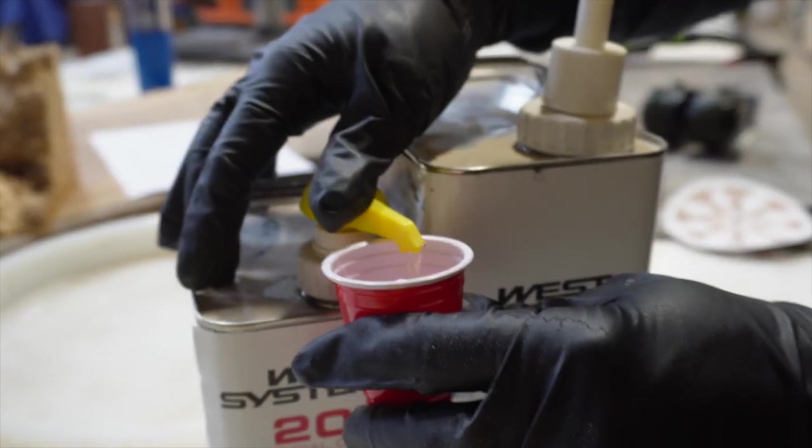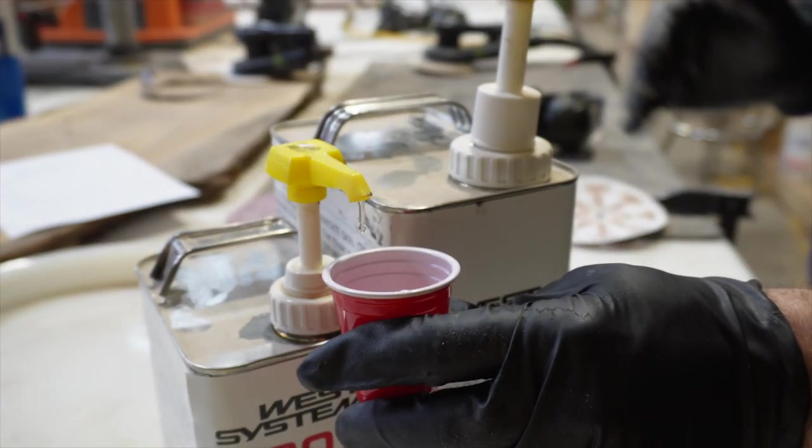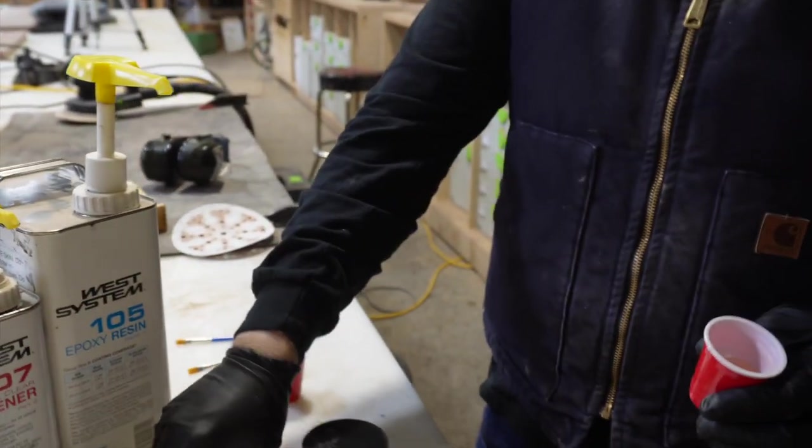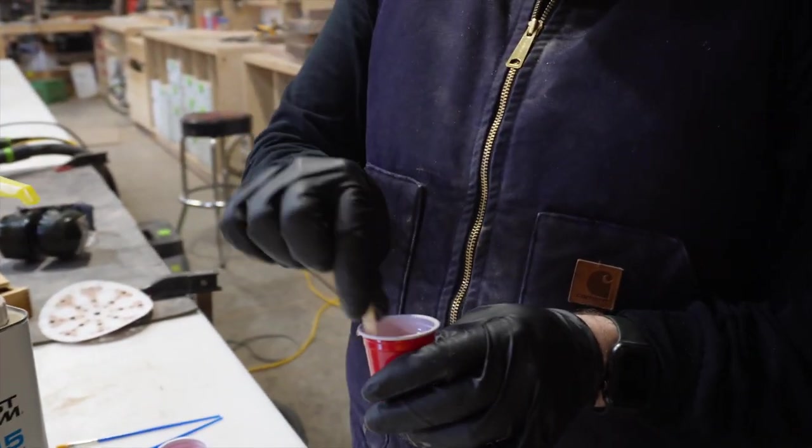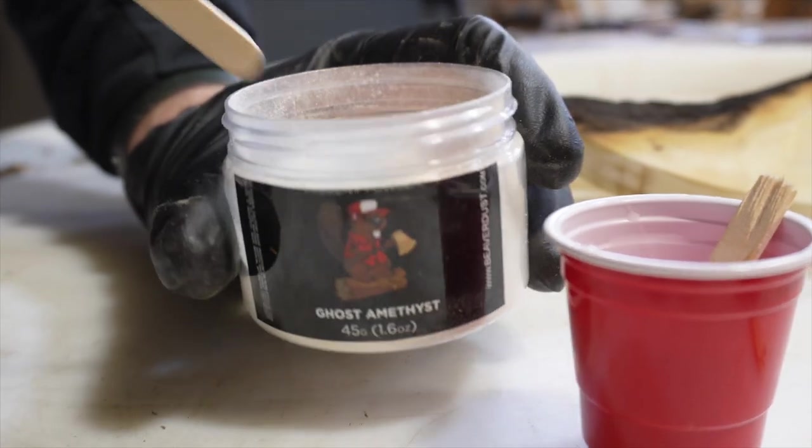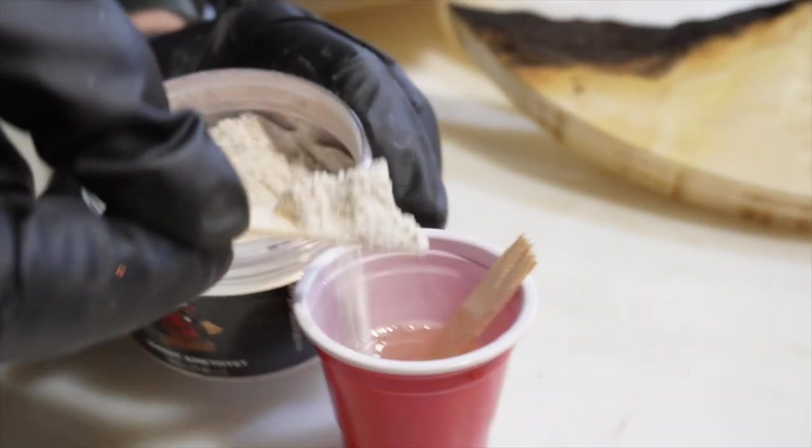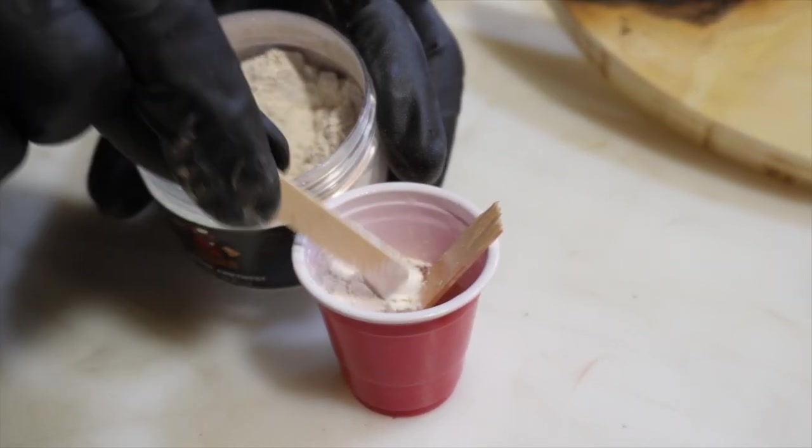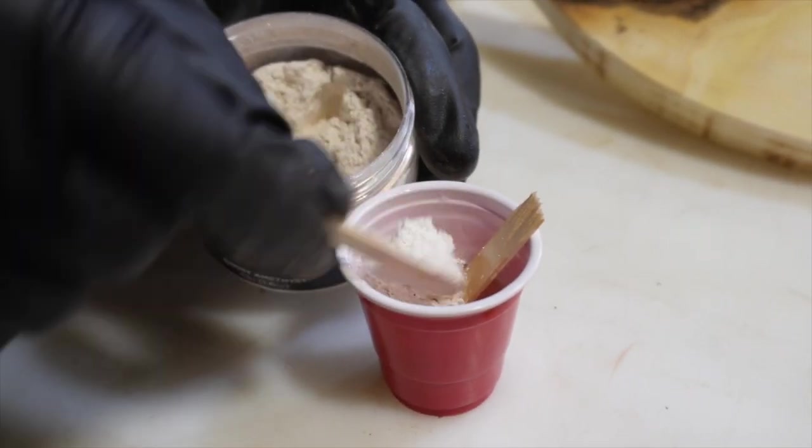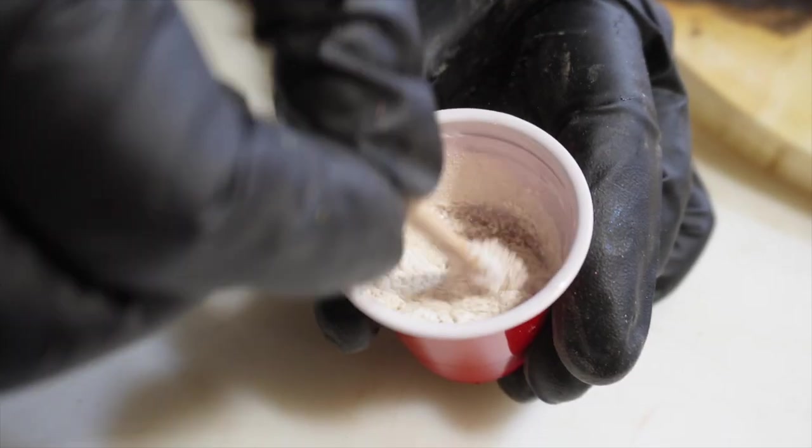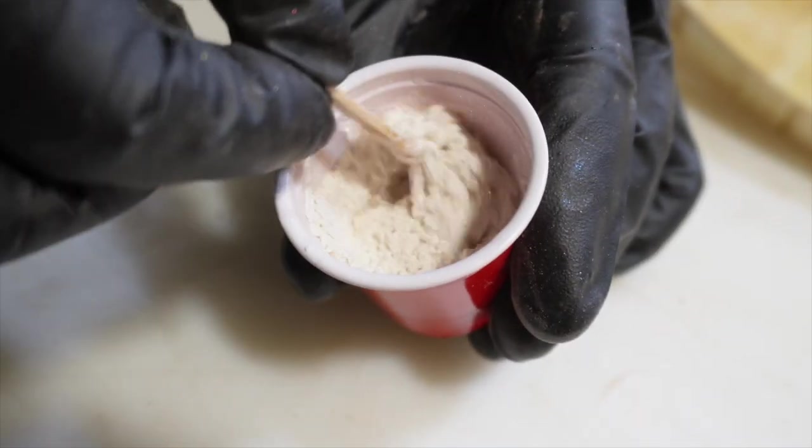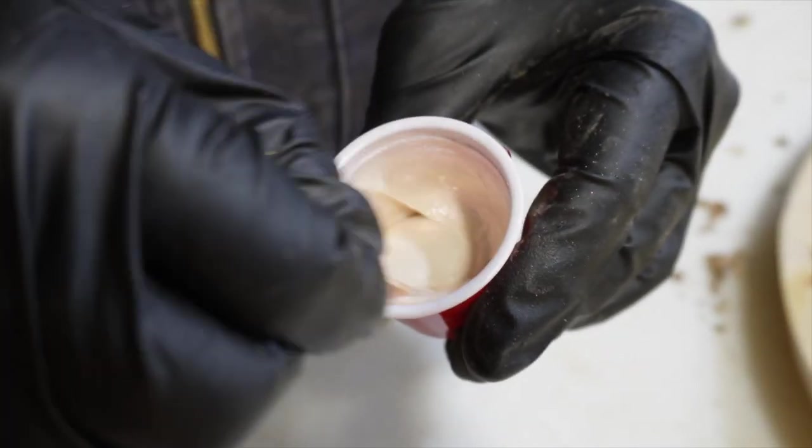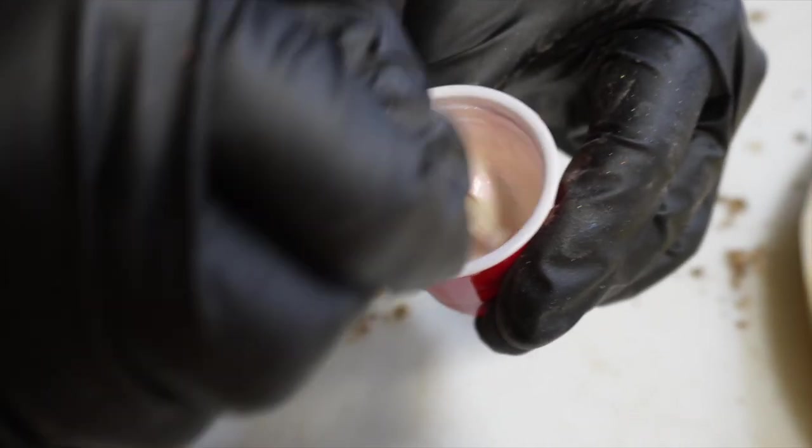This method will require the Beaver Dust ghost pigments as well as some West System faster curing epoxy. What we're going to do is mix the epoxy and the pigment together and then brush that epoxy onto the live edges. We're using ghost amethyst first, and you're going to want to go pretty heavy on the pigment because you want that epoxy to be very opaque and not translucent. Once you've thoroughly mixed the epoxy and the pigment together, you can start to brush it on the live edge.